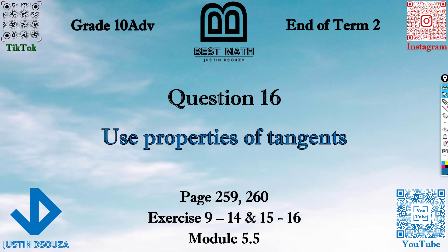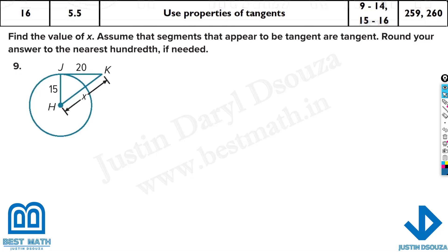Question 16, the first of the writing part, is to use properties of tangents. This is from Module 5.5. We have been given a figure and told to find the value of x. We need to assume the segments that appear to be tangent are tangents, and round the answer to the nearest hundredth if needed.